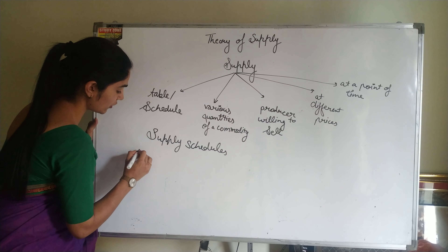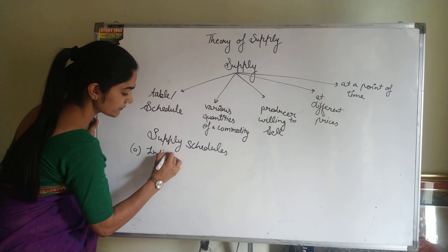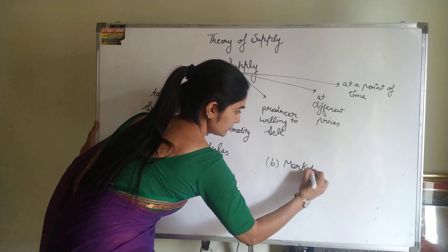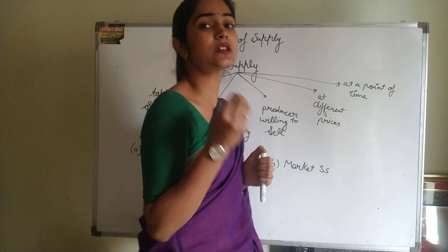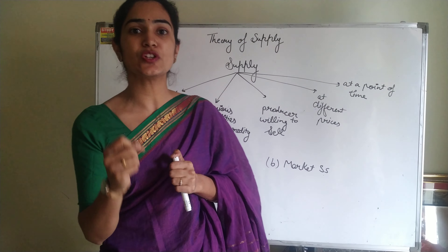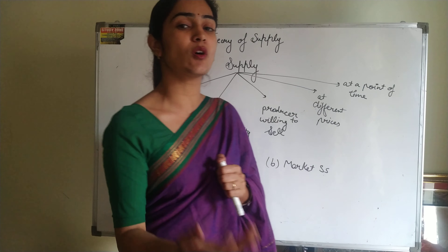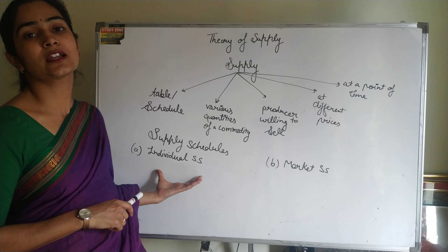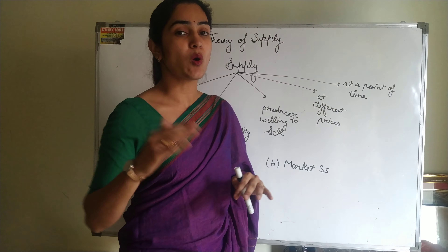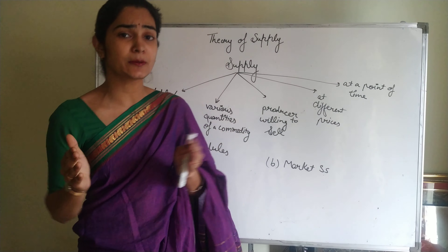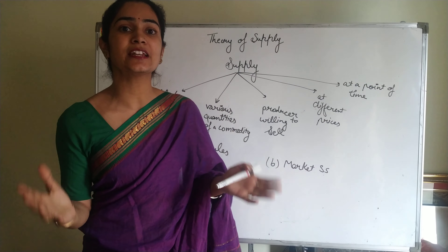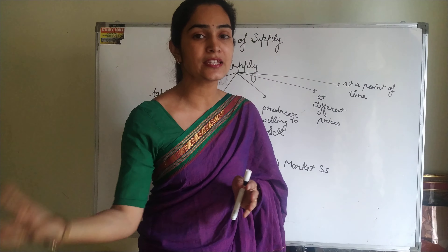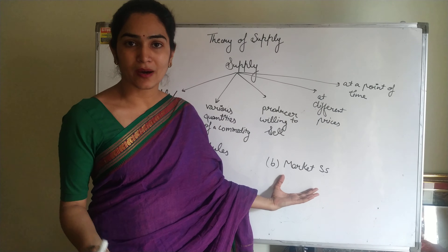Supply schedules are of two types: one is the individual supply schedule and another is the market supply schedule. The individual supply schedule refers to how many quantities one individual producer is selling in the market. When we club all individual producers — for example, firm A, firm B, and firm C — these firms together selling a particular commodity at a particular price gives us the market supply schedule.